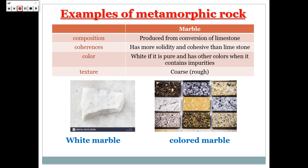Examples of metamorphic rocks: marble. Marble is produced from the conversion of limestone. Marble is more solid and cohesive than limestone. Marble is white if it is pure, and has other colors when it contains impurities. The texture of marble is coarse.